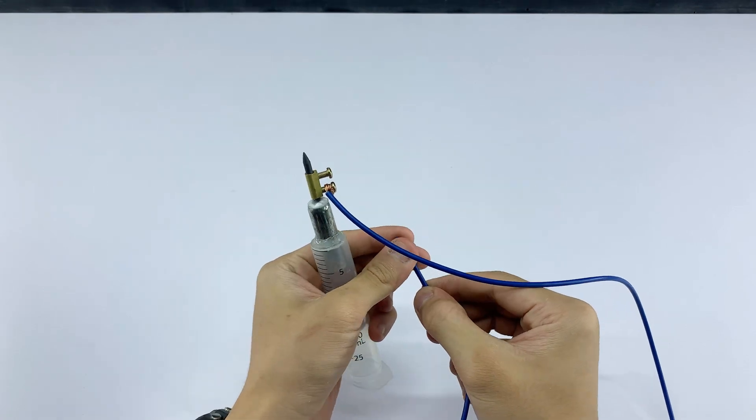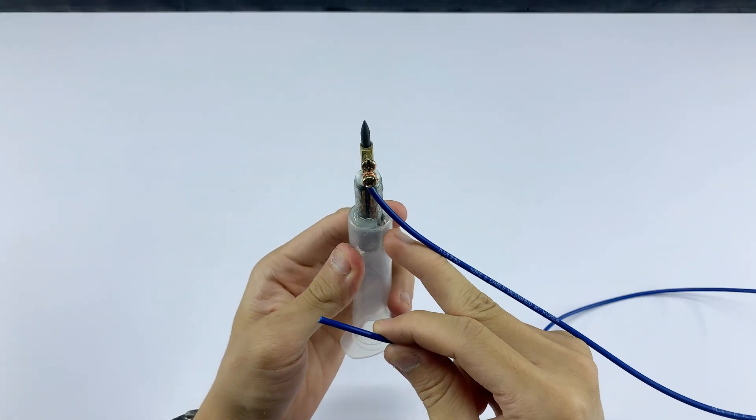I threaded one end of the wire into the hollow base of the syringe and then stripped off the insulation.